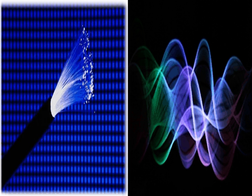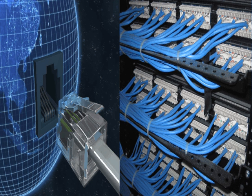Fiber optics are lines of thin glass or plastic that can send digital information by transmitting light signals. Optical fibers have the diameter of a human hair and are bundled up into optical cables. The fiber optic network is the next step in telecommunication network technology.